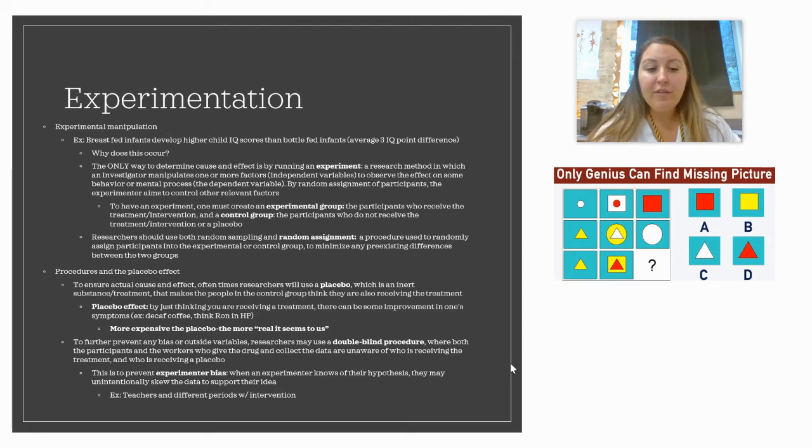To further prevent any bias or outside variables, researchers should use a double-blind procedure if they're able to. In a double-blind, there's the researchers who are running the study. They then hire people to administer the treatments. In a double-blind, neither the people administering the treatments or the participants know if they're getting the real treatment or a placebo. The reason why this is important is because it eliminates or prevents experimenter bias, which is when an experimenter knows of their own hypothesis, they may unintentionally skew the data to support their idea.